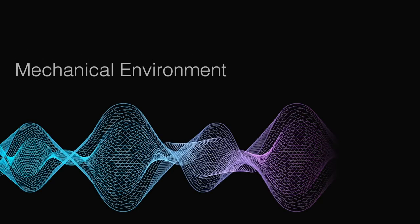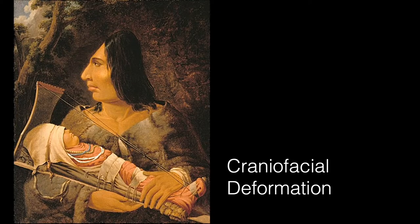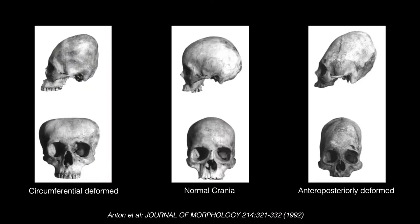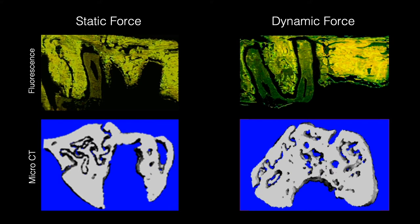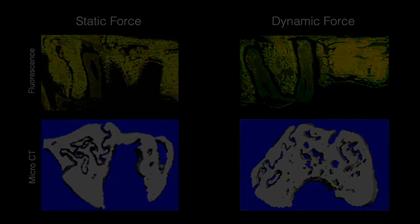Let's start with the mechanical environment. We know from history that our ancestors knew that constant or static forces can change the form of a skeleton. They would wrap their babies' heads, causing changes in the form of the skeleton — it would get wider or longer. But actually, static forces are not the best way to communicate with the skeleton. The best way is dynamic forces: the acceleration of force, the magnitude, and the frequency of application all matter. For example, if I pull one tooth with a static force, the bone resorbs. But we discovered that if we apply a dynamic force, the bone forms, not resorbs, and the shape of the bone is preserved.